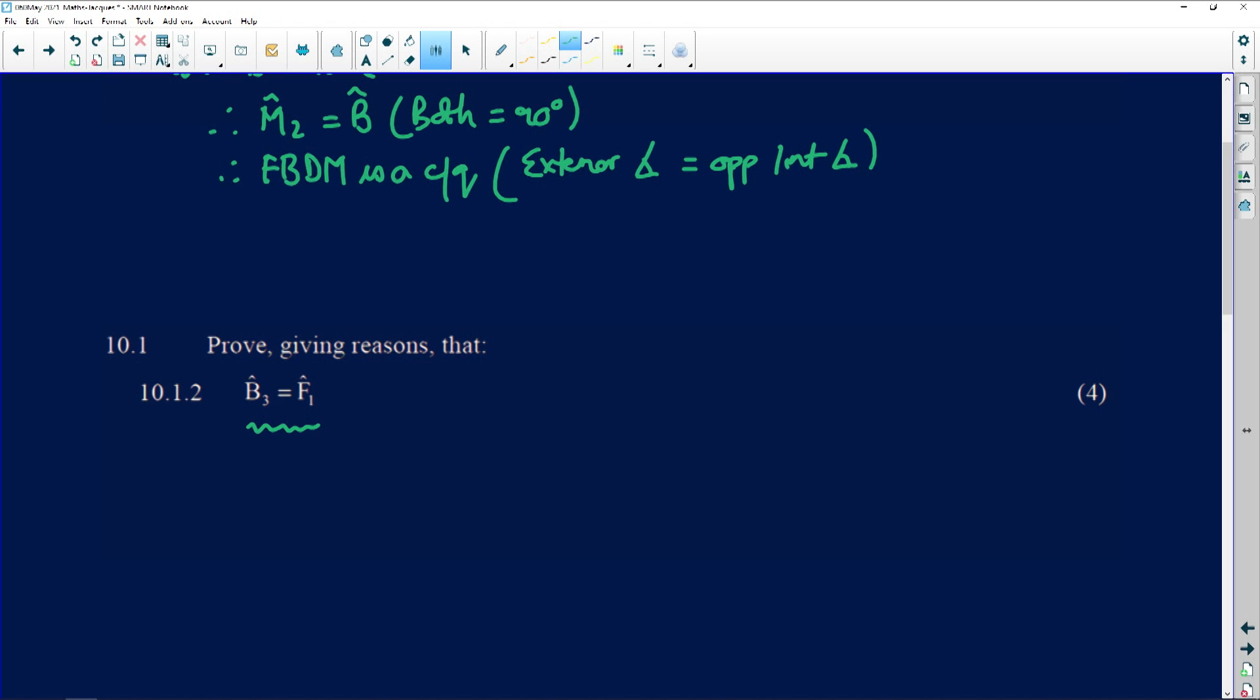So let's write it out. B3 is the angle between the tangent and the chord. B3 is equal to D2, and that was the tan chord theorem. But then also we had F1 which was equal to D2, and that was because of the exterior angle of the cyclic quad. CQ stands for that cyclic quad. Therefore B3 is therefore indeed equal to F1. And that's what they wanted us to prove. So we used the tan chord theorem to get there, and we used the fact that there was an exterior angle to the cyclic quad.